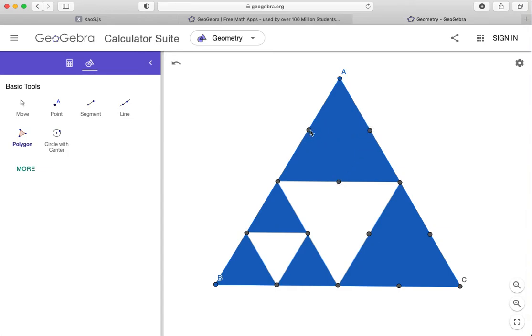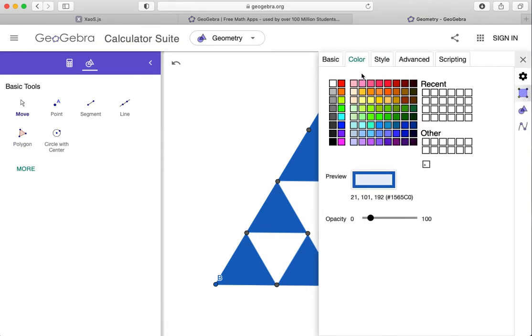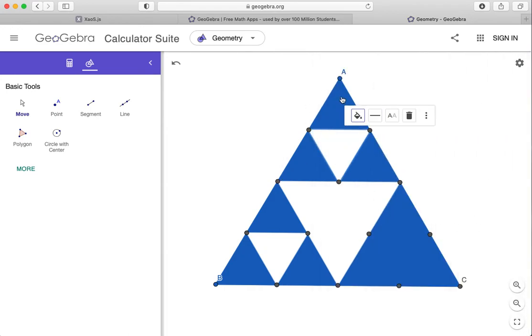And so remember, in a fractal, the idea is that I see the same pattern repeating itself over and over and over again. So you can see, once I've filled this in, that each of these upper triangles look like the bigger triangle. So, let's fill this one in.